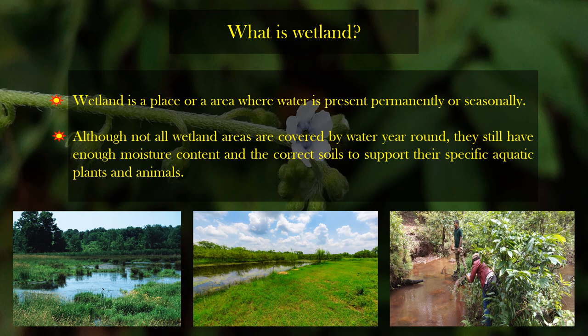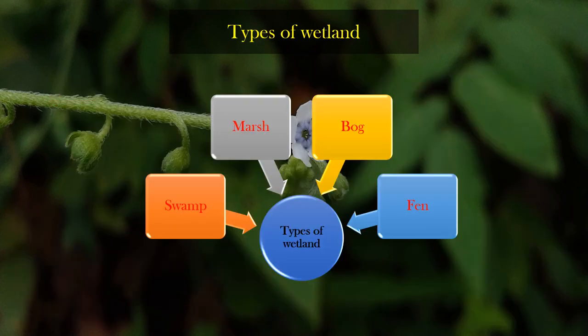You can observe the different wetlands where we are working. We are working in different wetlands of India. Now, types of wetland. The major types are swamp, marsh, bog, and fen.